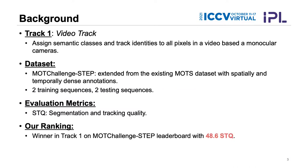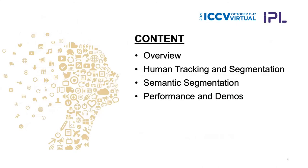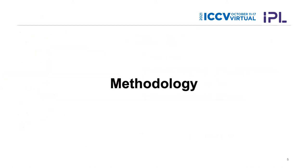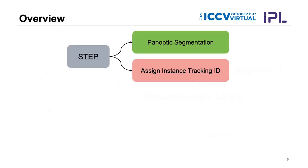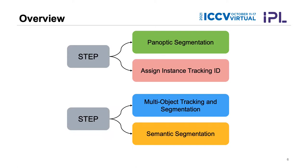Our proposed HVPS achieved first place with 48.6 STQ. Our presentation covers four parts: the method overview, human tracking and segmentation, the semantic segmentation part, and performance results and demos. Rather than the standard approach of panoptic segmentation followed by assigning instance tracking IDs, our solution first performs multi-object tracking and segmentation, then semantic segmentation.